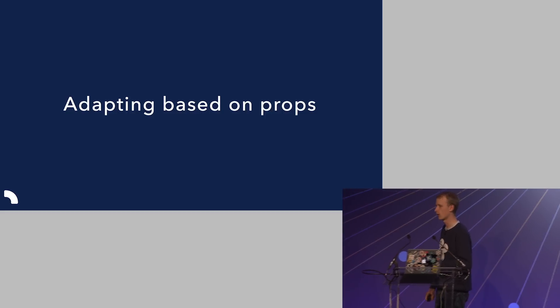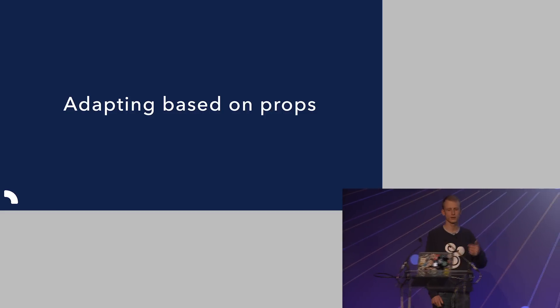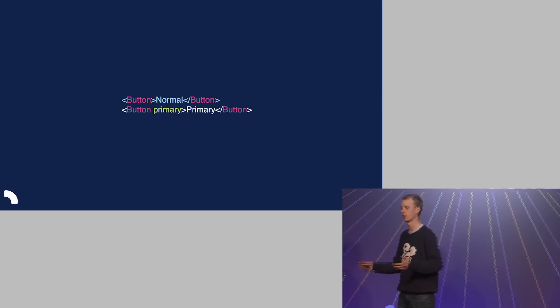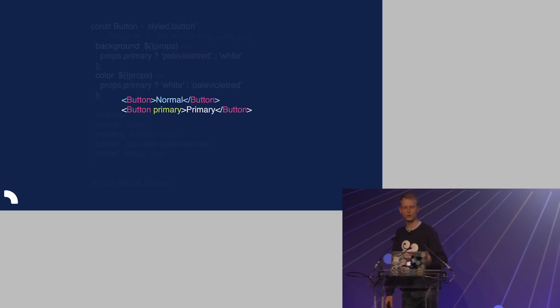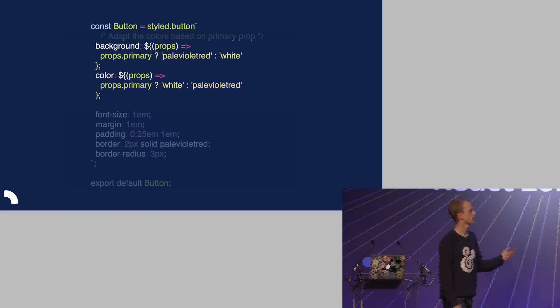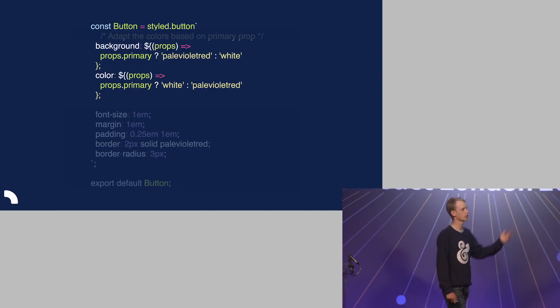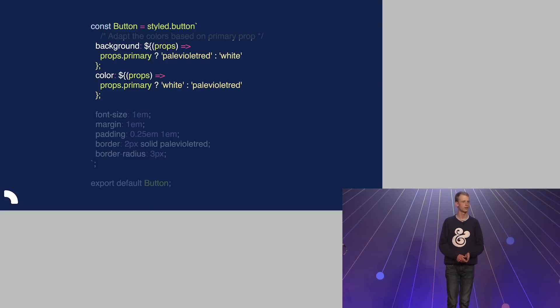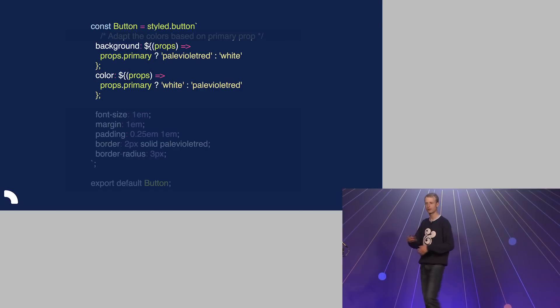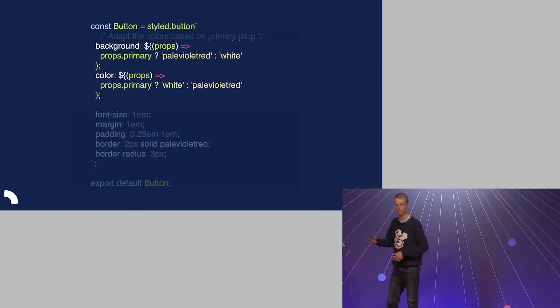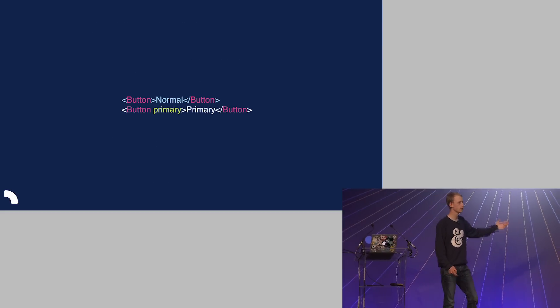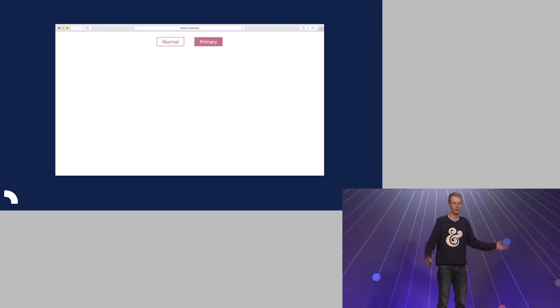Another thing built into Styled Components is adapting based on properties. Our button has a primary property — we want it bigger and more important if primary. Because we use tagged template literals, you can interpolate functions, and those functions get passed the component's properties. So we say: if the primary property is true, make the background pale violet red and color white; otherwise make the background white and color pale violet red. You use it like any React component — just 'button' or 'button primary' — and you'll see a normal button and a primary button in the browser.